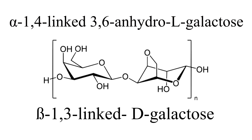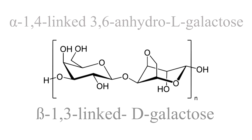Also, the gelling property of agar is due to the three equatorial hydrogen atoms on the 3,6-L galactose residues, which constrain the molecule to form a helix.